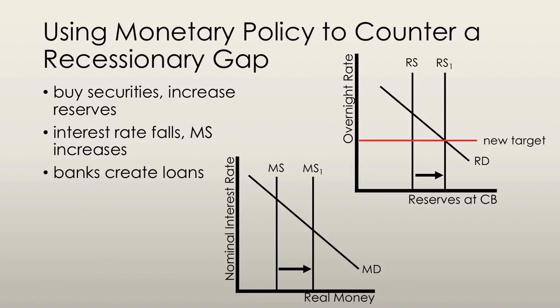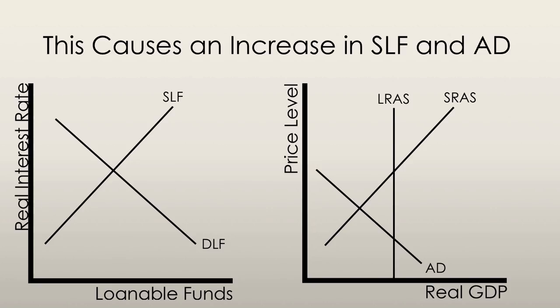This causes the supply of money to increase. Short-term interest rates fall, and the quantity of money demanded increases. Banks create money by making loans. In the short run, this increases the supply of loanable funds, assuming no inflation so that the real interest rate equals the nominal interest rate.